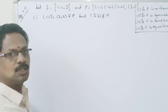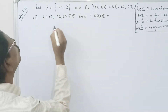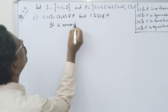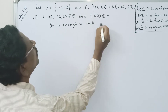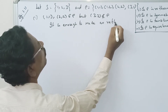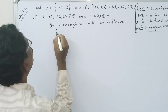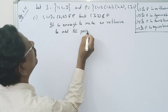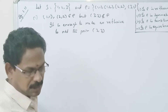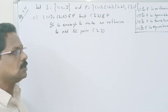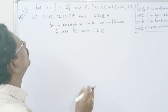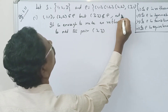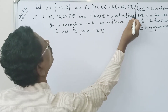Since (3,3) does not belong to R, it is enough to add the pair (3,3) to make R reflexive. Therefore, R is not reflexive.